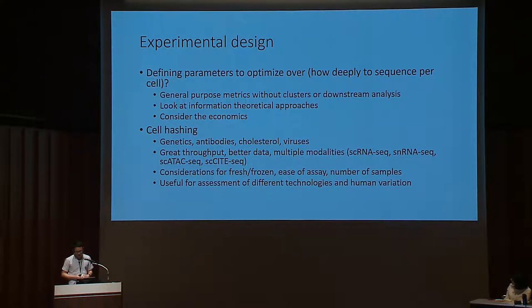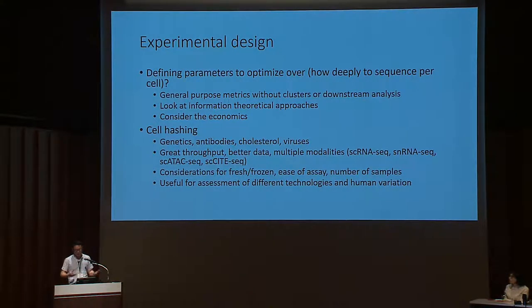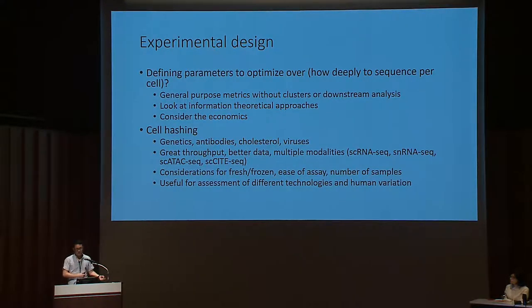These methods allow us to increase throughput per sample as well as per cell if we overload, identify, and remove doublets — providing better data. It works for multiple modalities including single cell, single nucleus RNA-seq, as well as single cell ATAC-seq and CITE-seq. There are considerations for processing fresh versus frozen samples, ease of performing assays, and how many samples can be multiplexed together. Multiplexing approaches are really useful for assessing differences in technologies or sites, different ways of cryopreserving tissue, and to look at human variation.